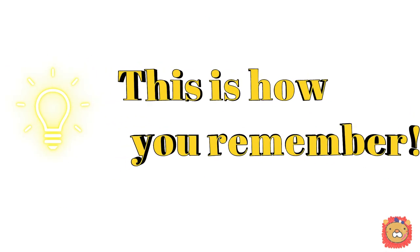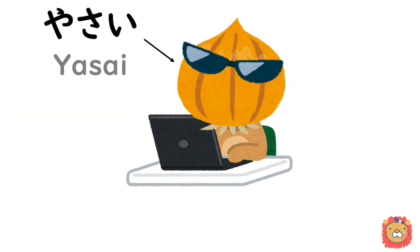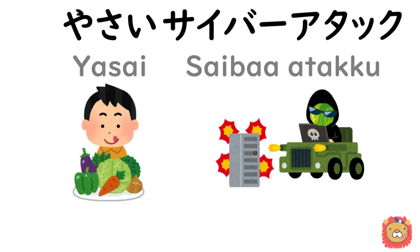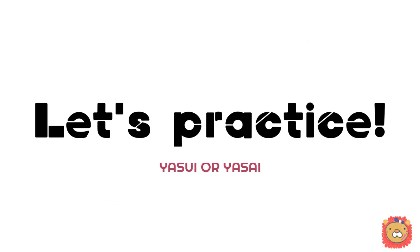And this is how you remember. Please imagine a 野菜 using a computer — mainly for a cyber attack. 野菜サイバーアタック! Can you picture the situation? Did you get this trick?